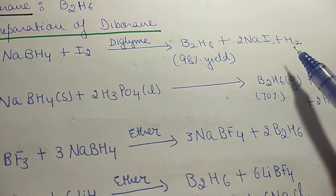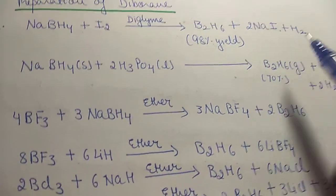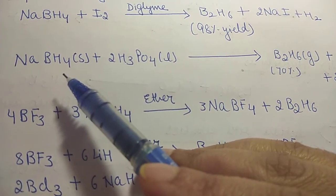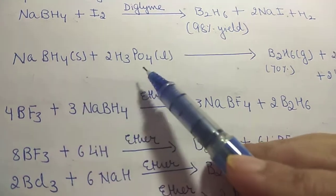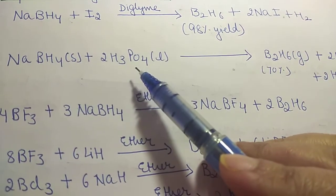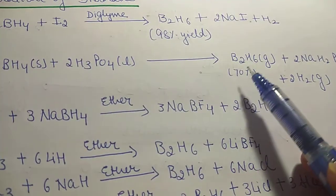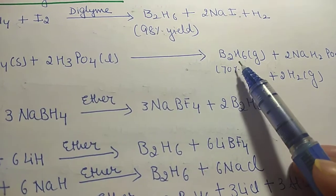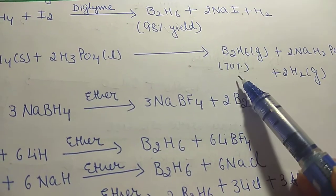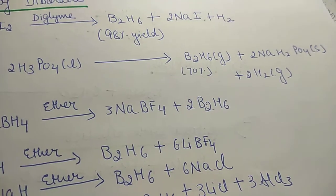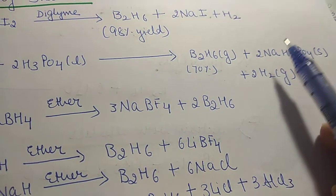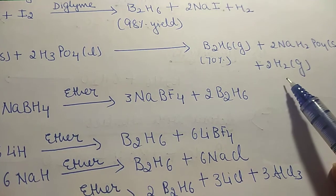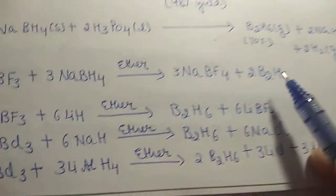Sodium iodide plus hydrogen are the byproducts. The second method is sodium borohydride in the solid state treated with phosphoric acid in liquid state, and what we get is 70 percent B2H6 in gaseous form, along with sodium dihydrogen phosphate and hydrogen as byproducts.